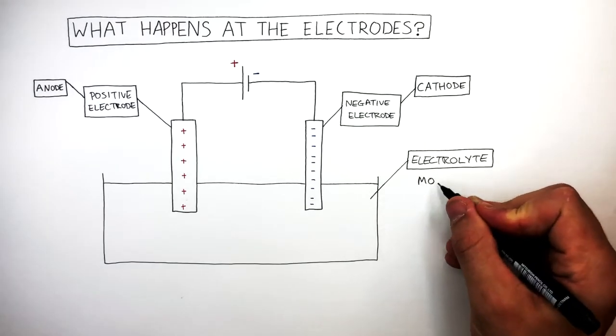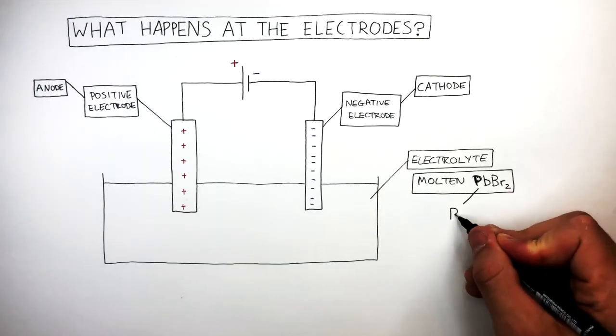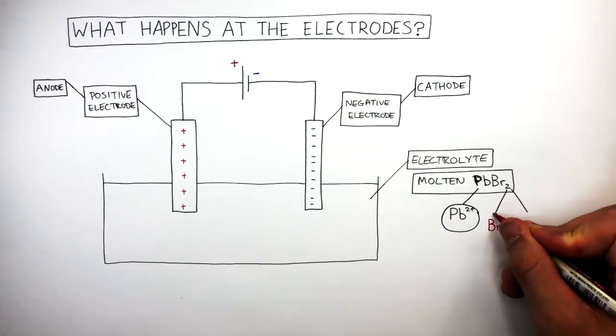In this case it is molten lead bromide. Molten means the ionic compound has been heated to very high temperatures and melted into a liquid. The strong ionic bonds have required a lot of energy to overcome the strong electrostatic forces of attraction. The chemical formula of lead bromide is PbBr2. It's an ionic compound containing one Pb2+ ion and two Br- ions.